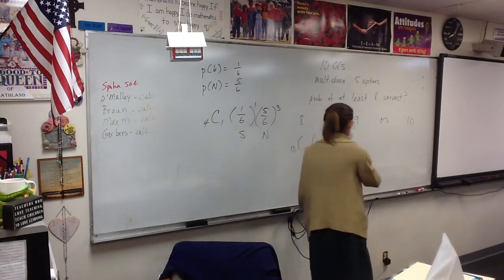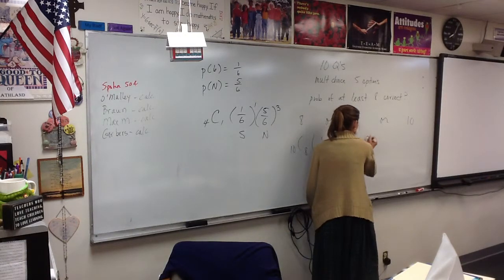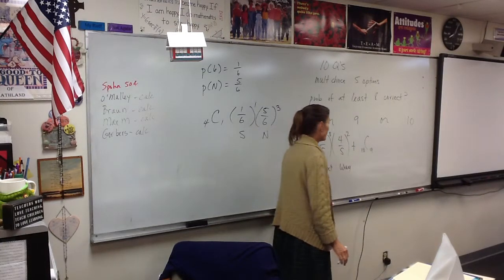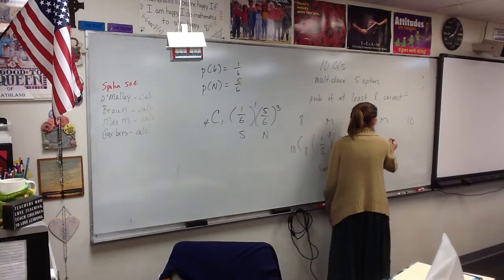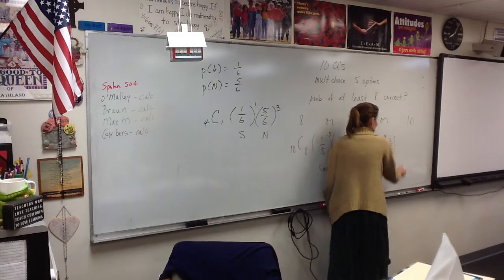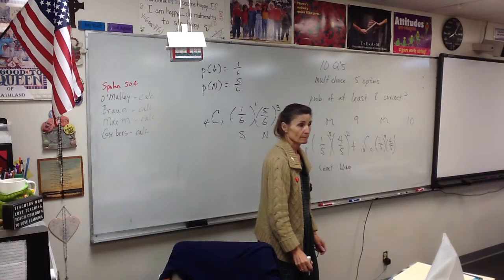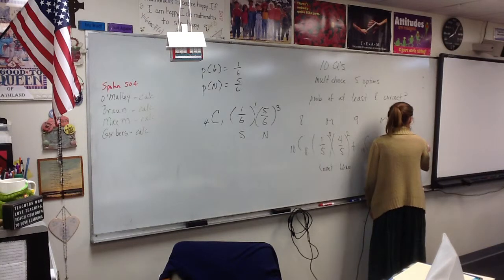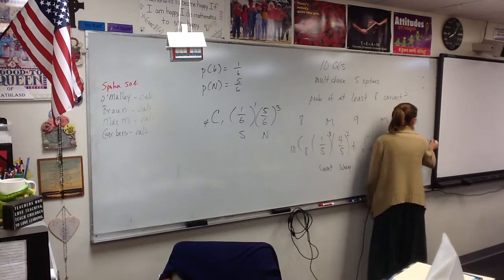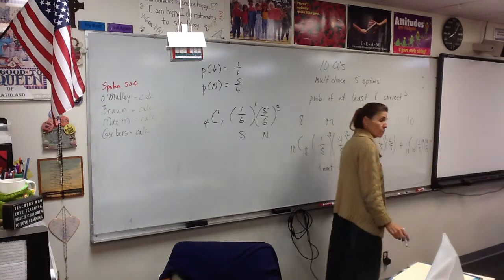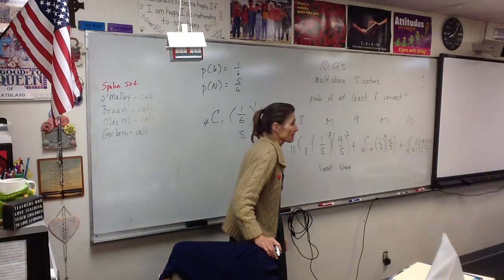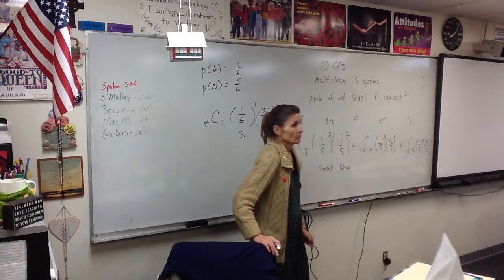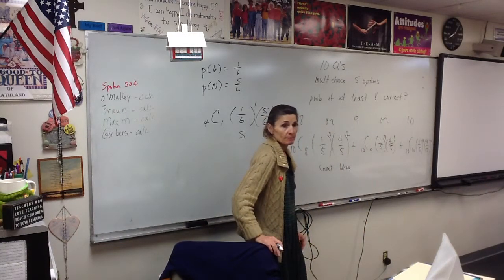What does nine correct look like? I'll add a plus. It's 10C9 — ten questions taken nine at a time. Still going to have 1/5 and 4/5, but this time it's nine right and one wrong. And then finally, what does all ten right look like? 10C10, times (1/5)^10. You could include (4/5)^0 but you don't need to. Calculate each one of these and add them all up — that would be your answer.